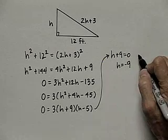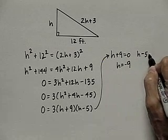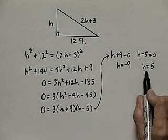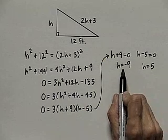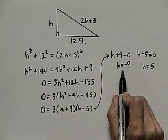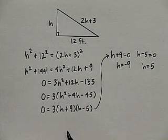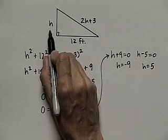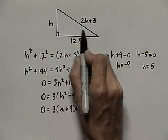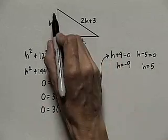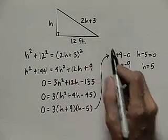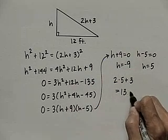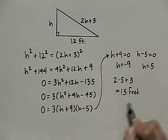Now, using the zero product property, I know I can set each factor equal to 0, and I see that I, when solving the equation, get two values of H, negative 9 and positive 5. However, as a side of a triangle, negative 9 cannot be, a side of a triangle can't be negative, so H is 5. And if H is 5, the amount of rope connecting the boat to the dock is 2 times 5 plus 3, or 13 feet of rope.